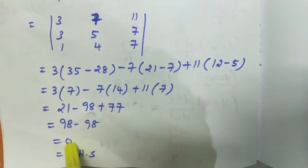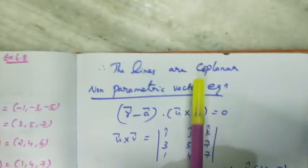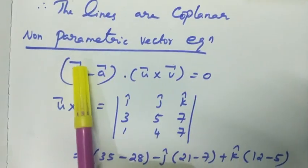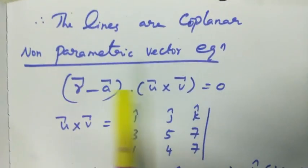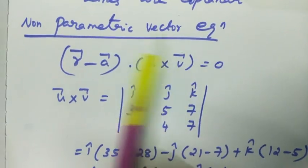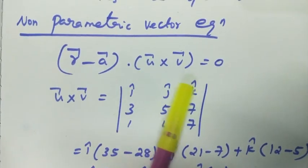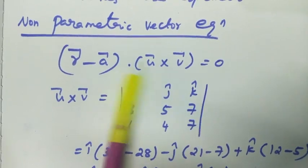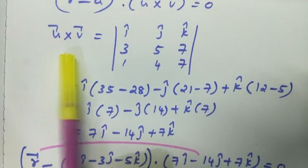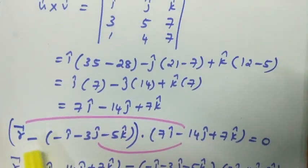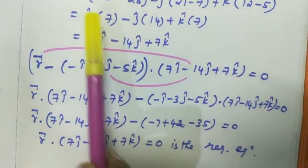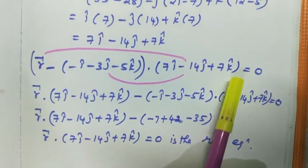Non-parametric vector equation: R vector minus A vector dot u vector cross v vector equal to 0. So first we can find out u cross v. U vector cross v vector determinant i, j, k.